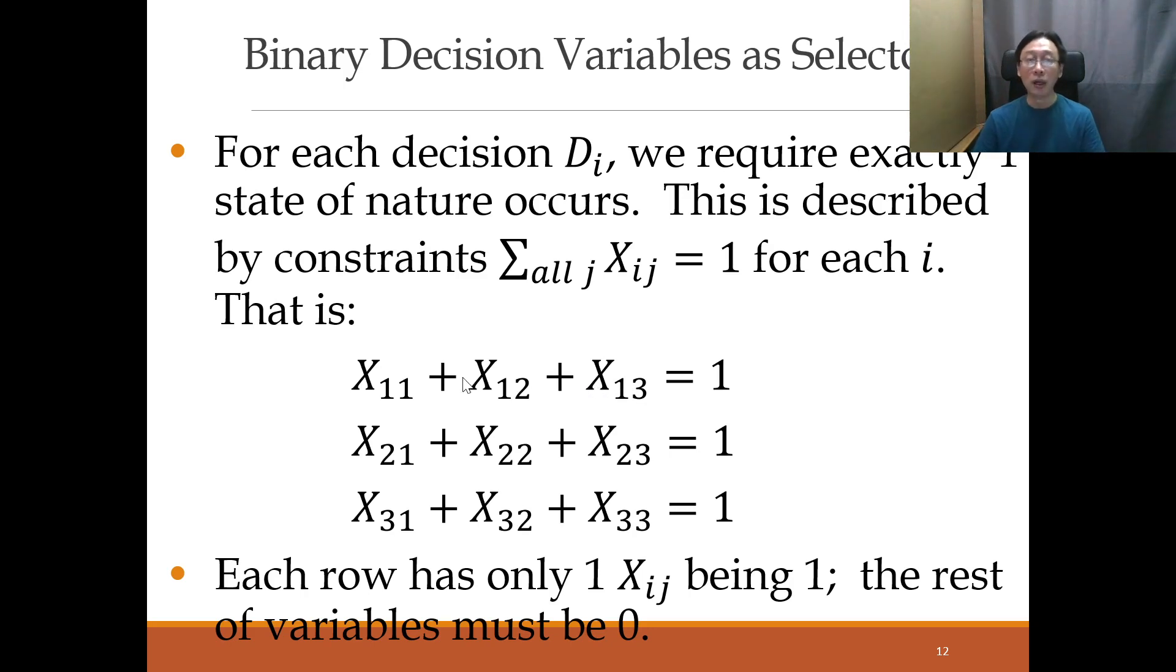Because then it will fulfill equals to 1. It cannot be 0, 0, 0. It cannot be 0, 1, 1 because that will add up to 2 and so on. So it cannot be all three turned on. So only one and only one, exactly one variable out of X11, X12, X13 will be turned on. So we do that for each row to ensure that in each row, one of the state of nature will be selected, one and only one.